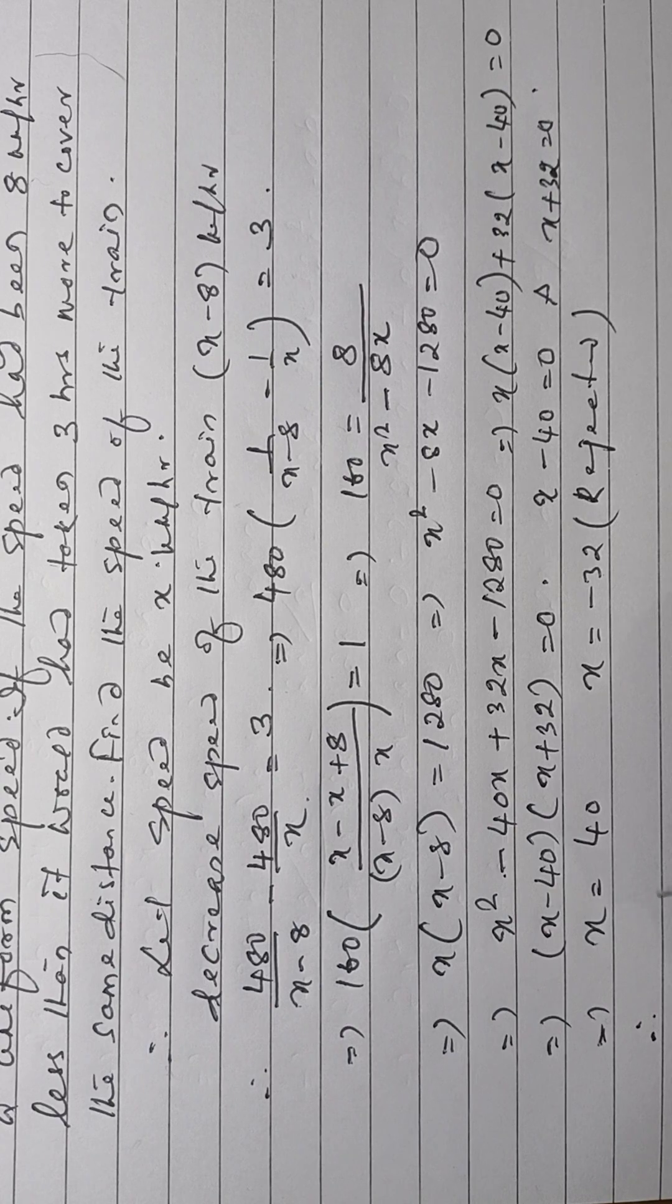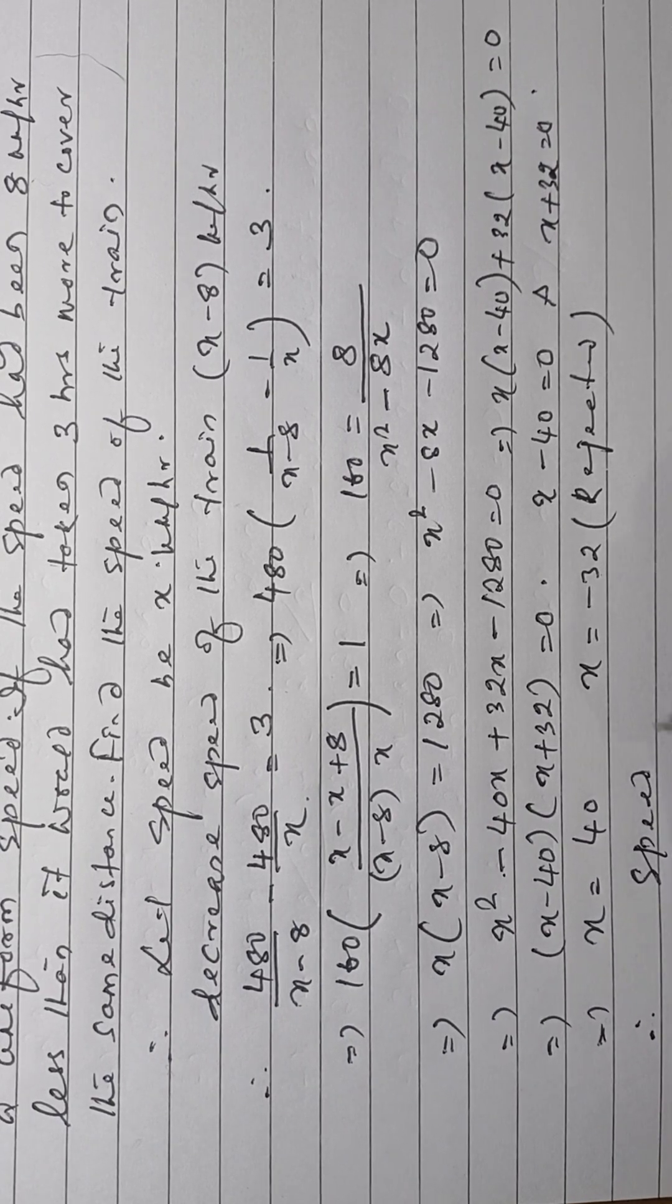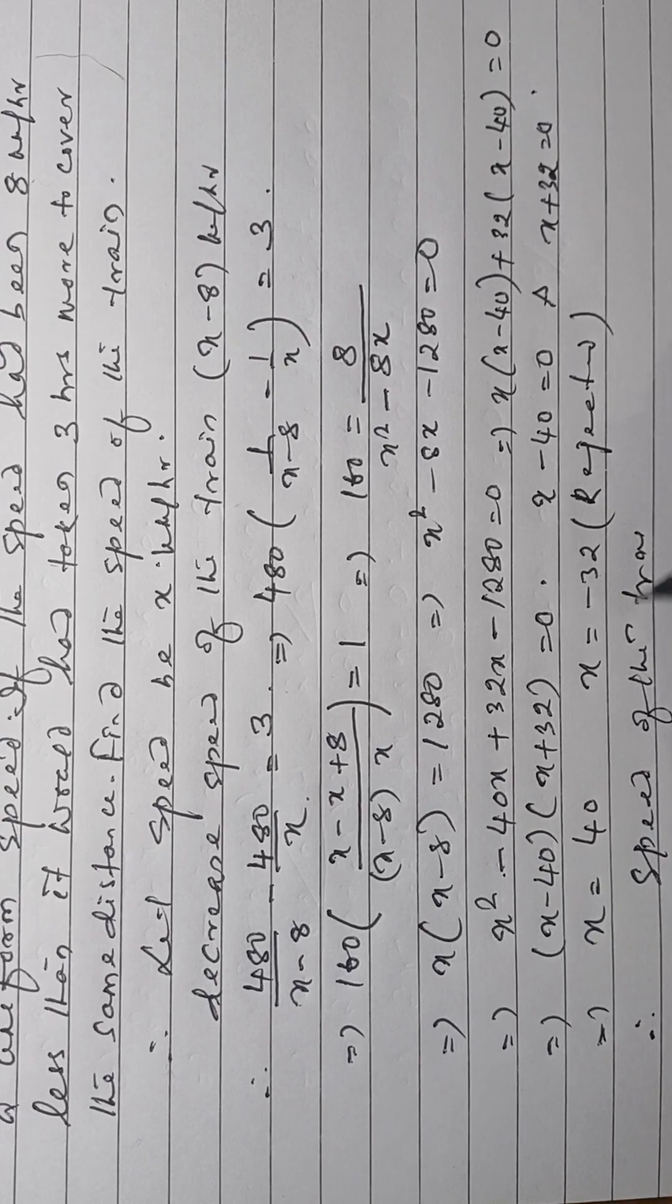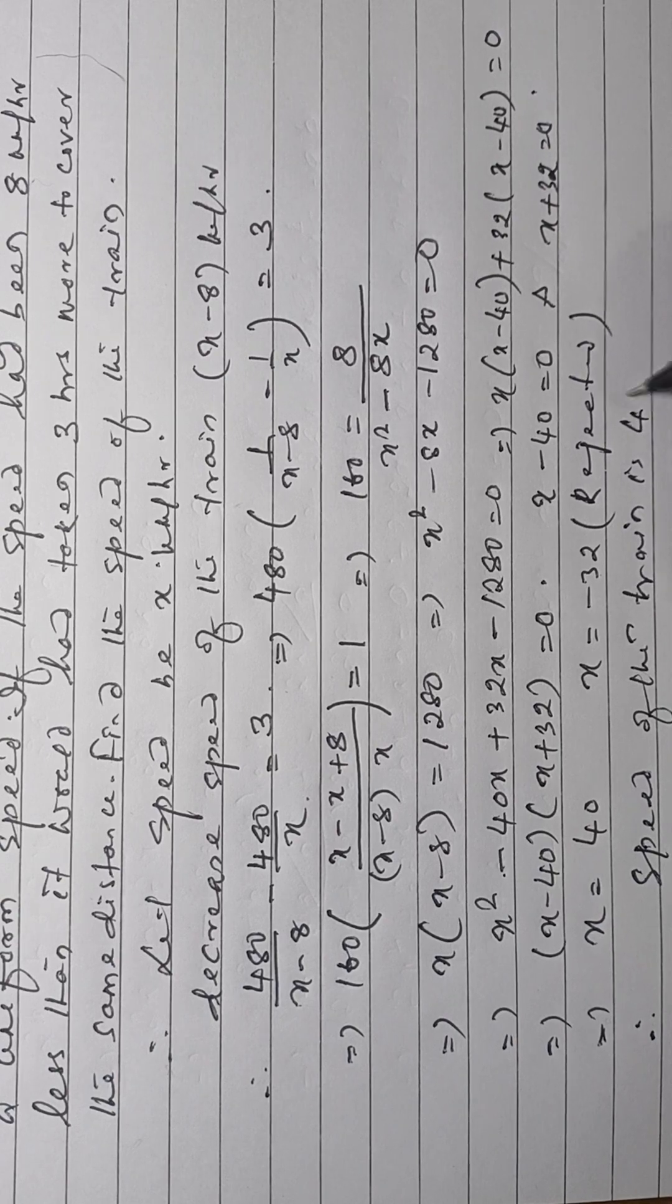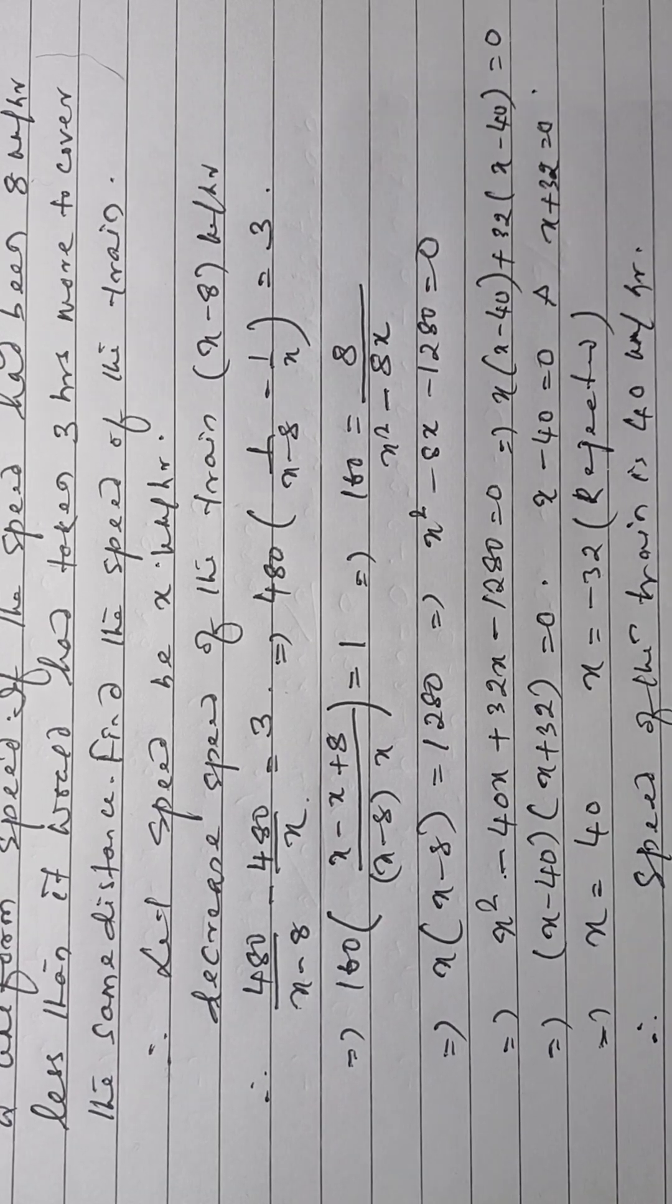So, usual speed of the train is 40 kilometer per hour.